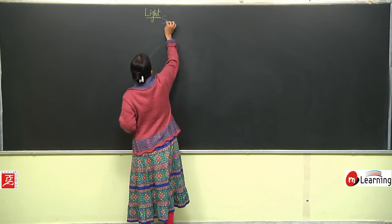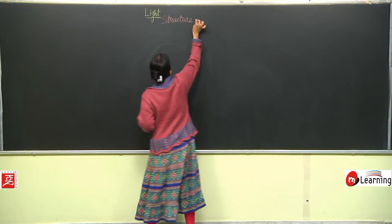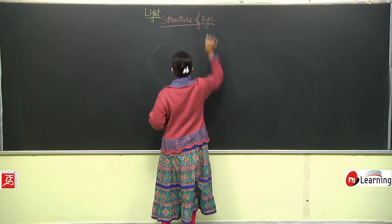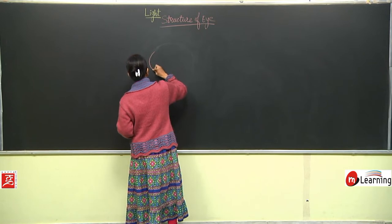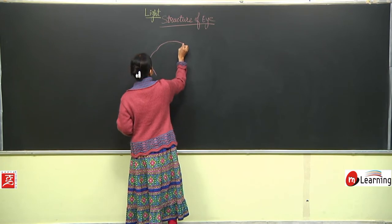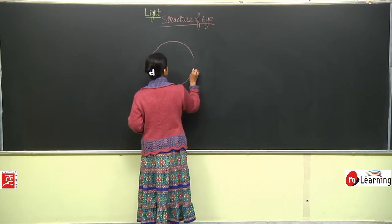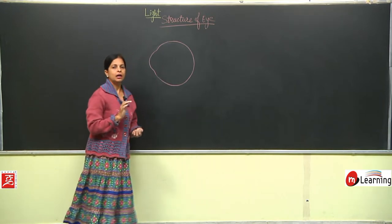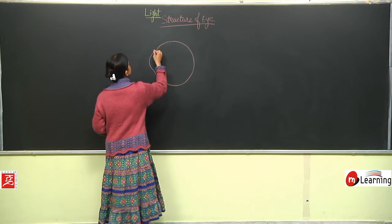I will write here the structure of the eye and I will draw a rough diagram of the eye so that we can understand things a little bit in a better way. I am drawing here the structure of the eye — just a rough diagram so that we can understand the parts we need to know.